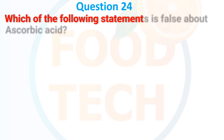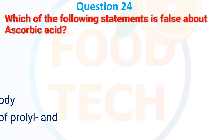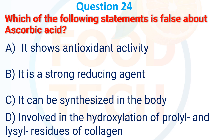Question 24. Which of the following statements is false about ascorbic acid? A. It shows antioxidant activity. B. It is a strong reducing agent. C. It can be synthesized in the body. D. Involved in hydroxylation of proline and lysine residues of collagen. The answer is C: it can be synthesized in the body.